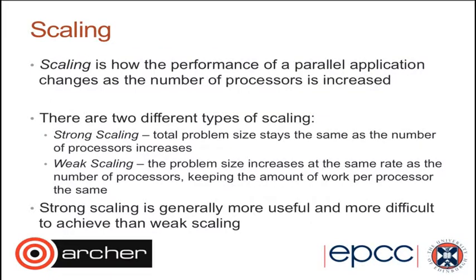So what do we mean by scalability, or scaling? Scaling is how the performance of a parallel application changes as the number of processors is increased — what happens to the execution time as you add more processors. There are actually two types of scaling. In strong scaling, the total problem size N stays the same and we only increase the number of processors. So how does your code behave when the problem size is fixed and you're running it on more and more processors?